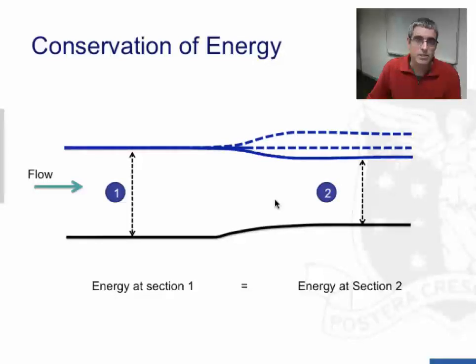And in order to maintain the conservation of energy, the elevation has to decrease, the water level has to decrease, which means the potential energy decreases. So from one to two, the kinetic energy increases, but the potential energy decreases.